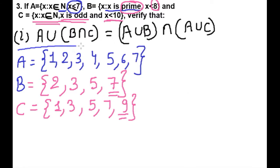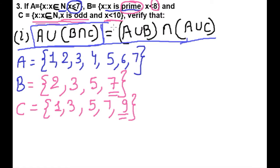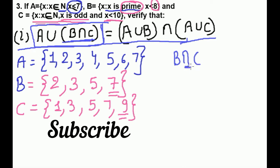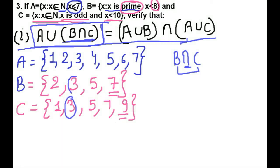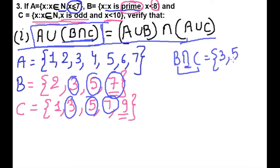Now we will solve the equation. First we solve the left-hand side. We need A ∪ (B ∩ C), so first we find B ∩ C. Intersection means we find the common elements between B and C. Common elements between B = {2,3,5,7} and C = {1,3,5,7,9} are 3, 5, 7. So B ∩ C = {3, 5, 7}.